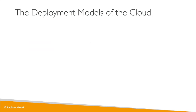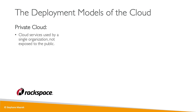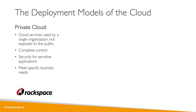There are different kinds of clouds. The first is called a private cloud — a provider such as Rackspace offers cloud services used by a single organization, not exposed to the public. You get your own private cloud, managed by someone else, while you retain complete control over it. This offers more security for sensitive applications and may meet specific business needs. This is out of scope for this course, but still good to mention.